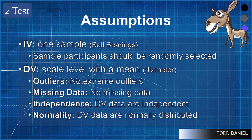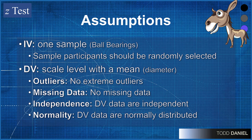We can add up, divide by n, and get an average for the diameter of the ball bearings in our sample. We should also look at our data set to make sure we don't have any extreme outliers or missing data. We know from the random selection that the data should be independent, and we can check for normality with our software.